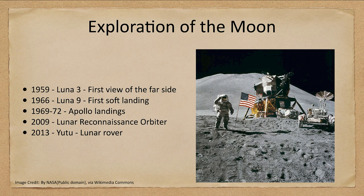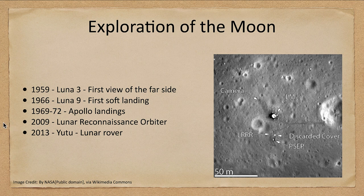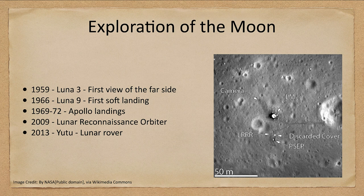Exploration did not stop after the Apollo landings. The Lunar Reconnaissance Orbiter in 2009 was able to take images and actually see the Apollo landing sites from lunar orbit. While these sites are not visible from Earth, they are visible from lunar orbit, and the orbiter maps not just those sites but the entire moon surface in detail.